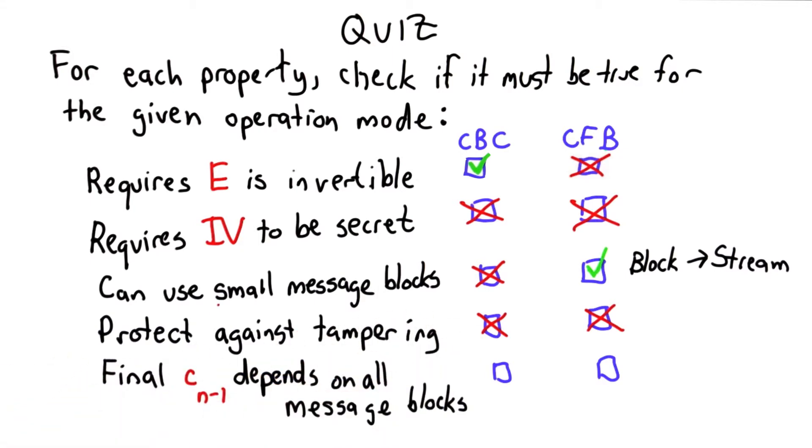An attacker can modify the blocks, can move blocks around. The decryption may or may not look like a valid decryption depending on what the contents are, but there's no way to easily detect that there's been tampering with either of these modes. And we'll talk about in a future class ways to provide message authentication that would make it so you can detect when tampering happens.